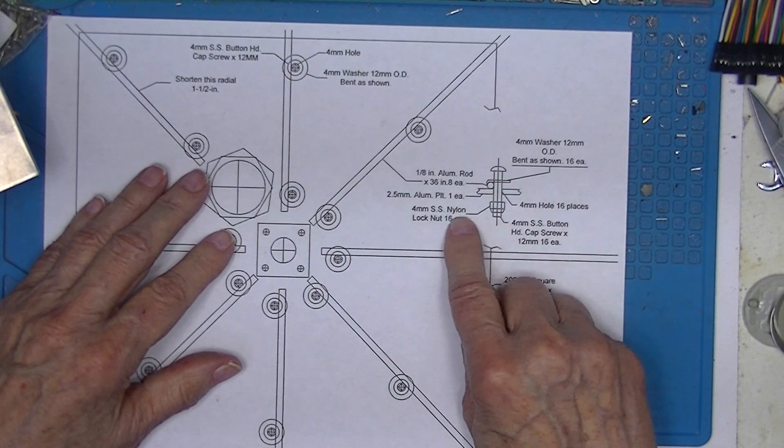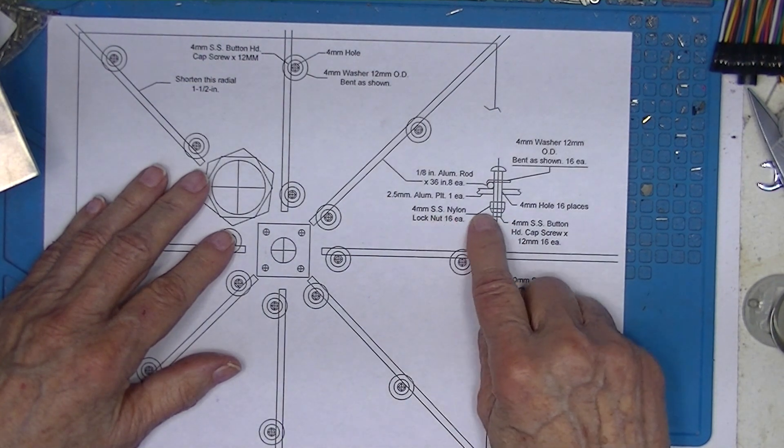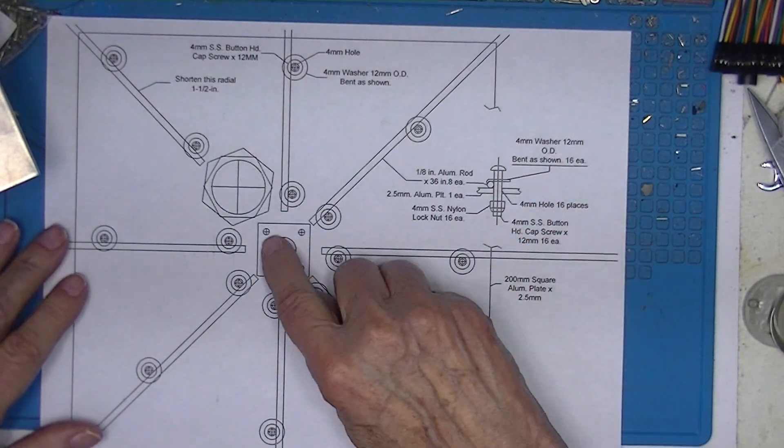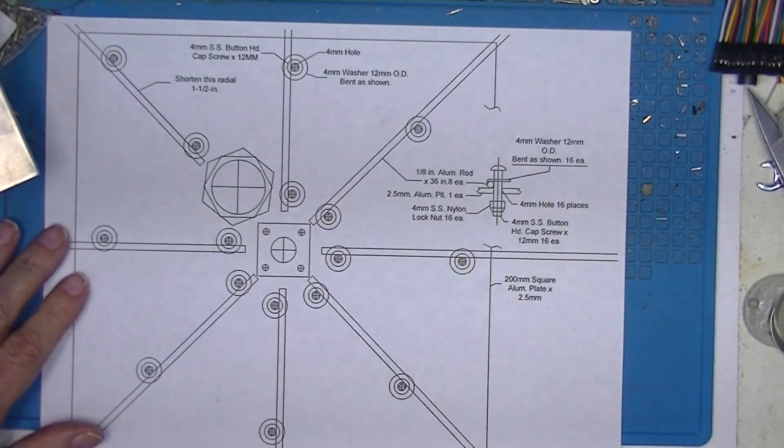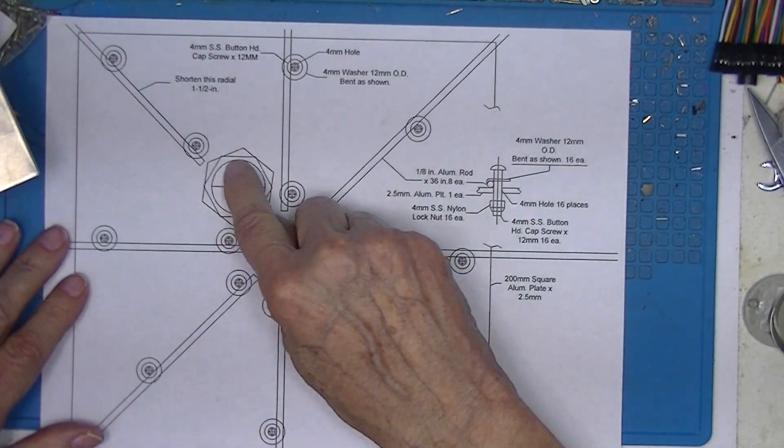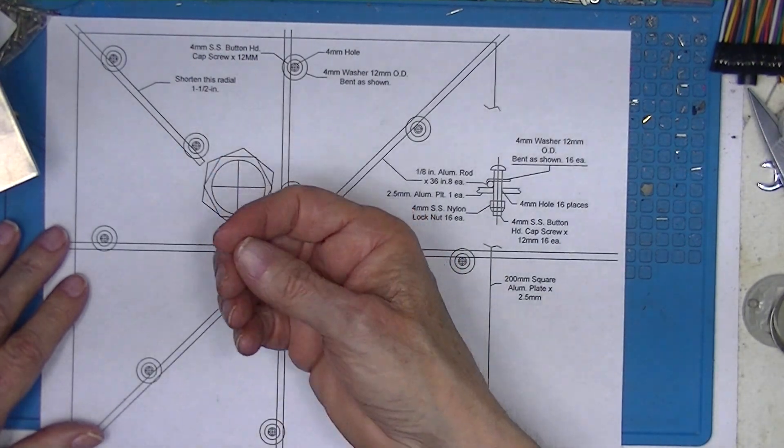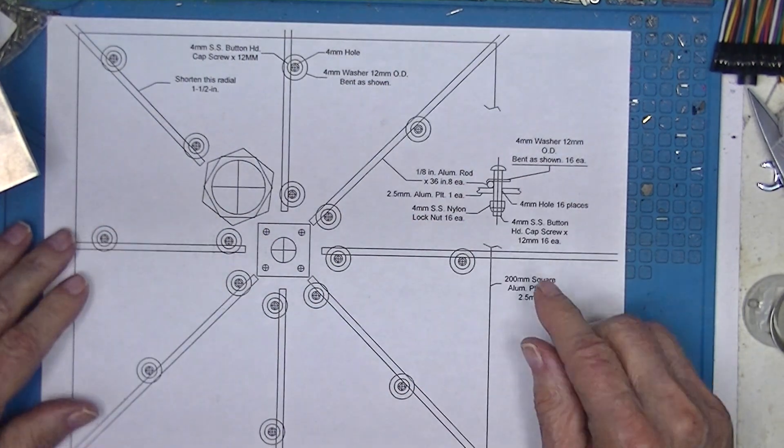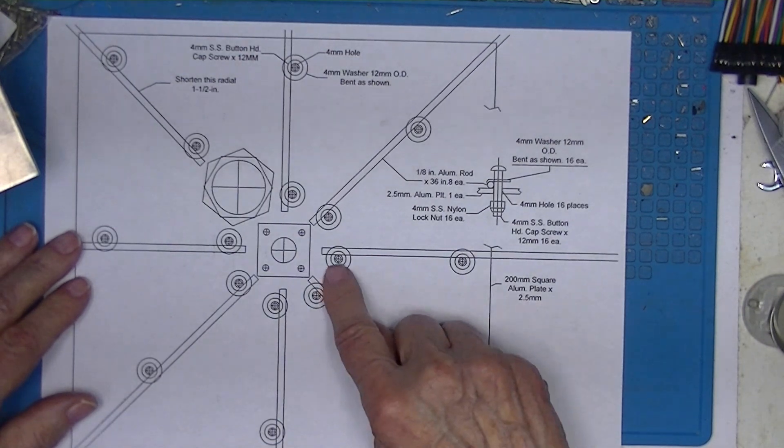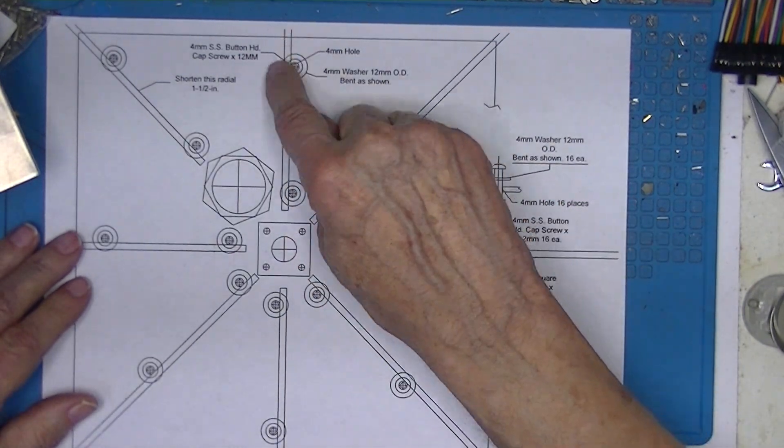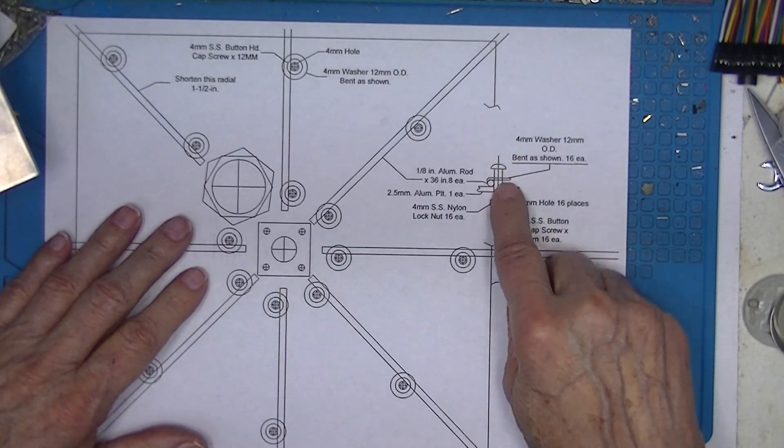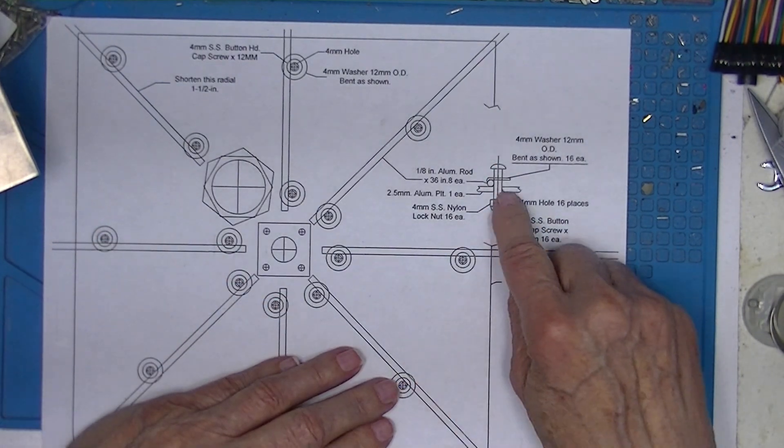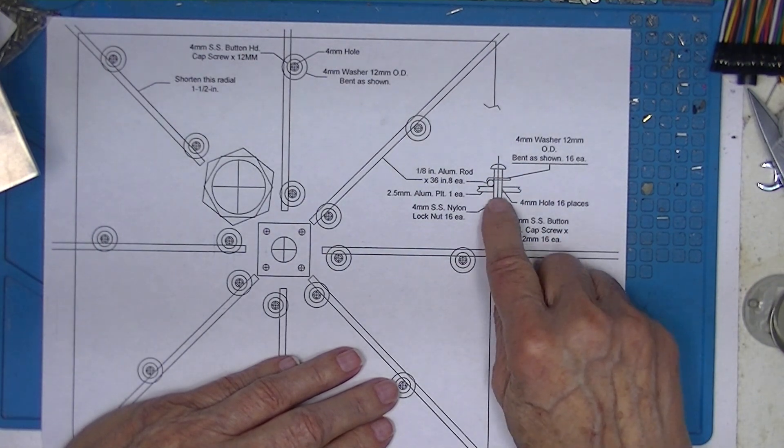4mm bolts secured with stainless steel nylon lockers. So that should provide me with a mounting plate for the antenna, a mounting plate for the EMT conduit coming up underneath. It won't pass through the plate. So I need to drill 16 holes for the 4mm bolts, get 16 bent washers and 16 nuts.